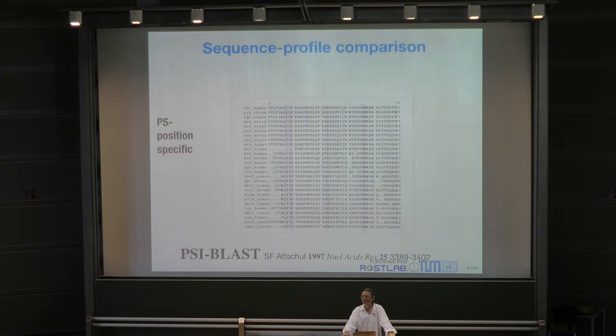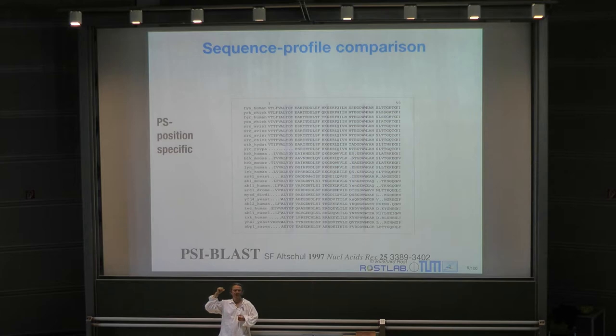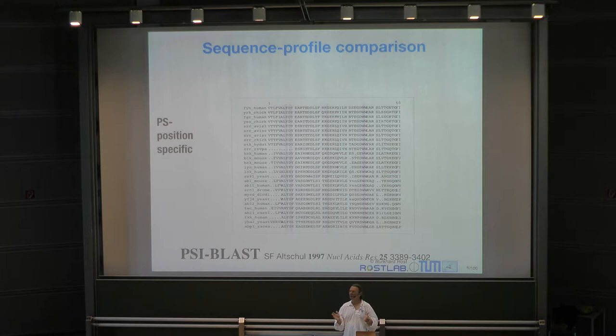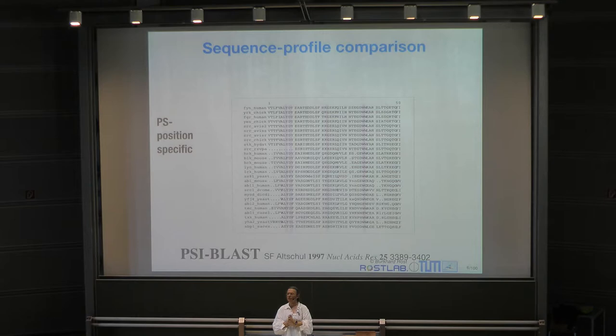The question is: when building up the family by pairwise alignment — taking one query sequence and aligning it against 85 million — does every sequence that enters the family have to be above some similarity threshold? You apply the threshold to every single comparison. Everyone who comes into the family in the first round must be more similar than some threshold. The answer is yes.